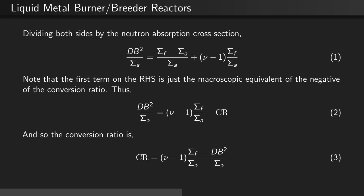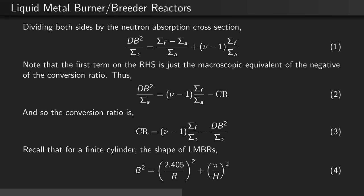Solving for the conversion ratio, we see that CR equals (nu minus 1) times Σf over Σa minus D B-squared over Σa. The shape of an LMBR is a cylinder, and so recall that for a finite cylinder, B-squared equals (2.405 divided by R) squared plus (π over H) squared.